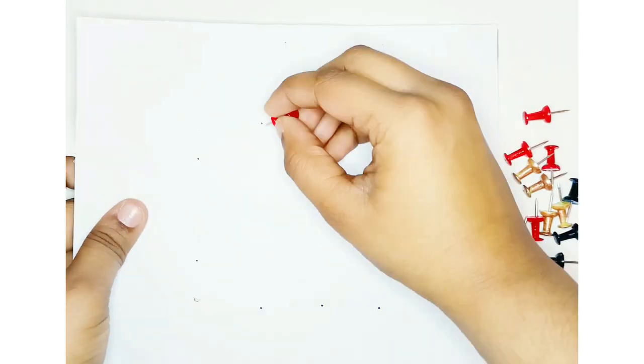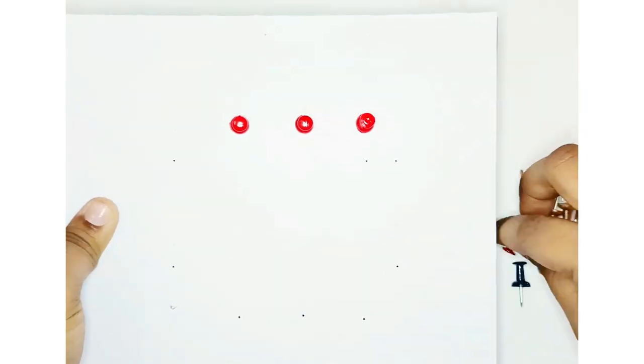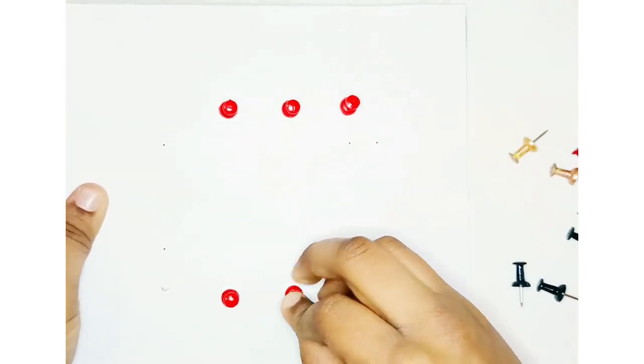Procedure: Place a chart paper firmly on a thick board with the help of board pins. Fix some paper pins randomly on the board.